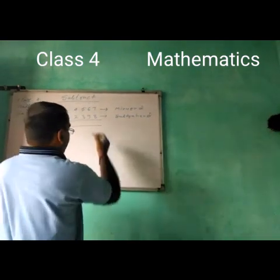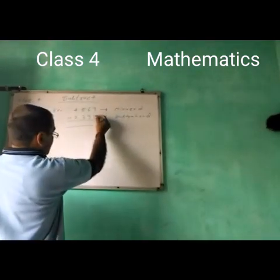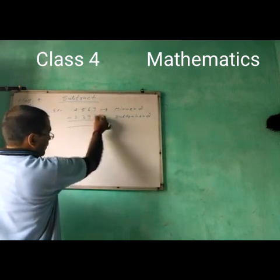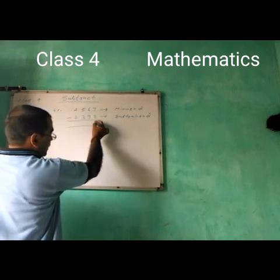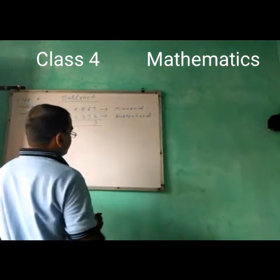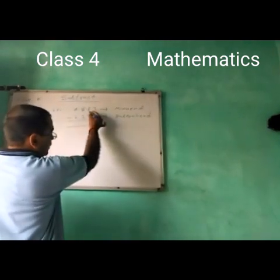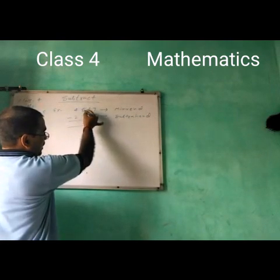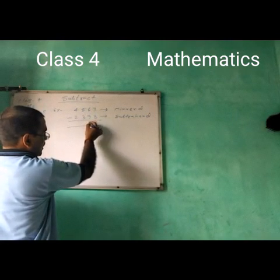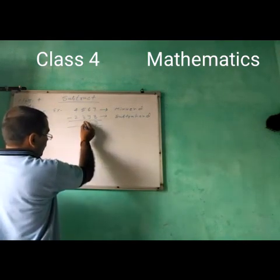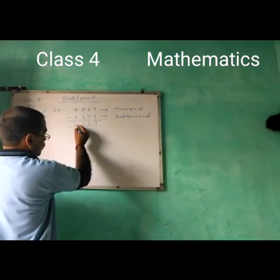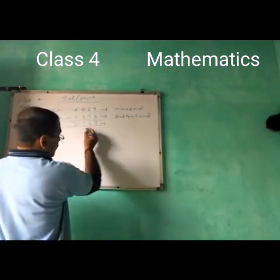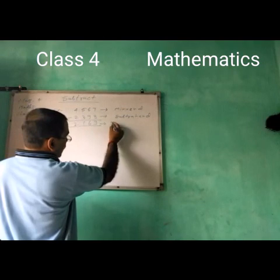When we subtract, 7 minus 8, we carry: 17 minus 8 equals 9. Here, 5 minus 9, we carry: 15 minus 9 equals 6. Then 4 minus 3 equals 1, and 4 minus 2 equals 2. The answer 2169 is called different.